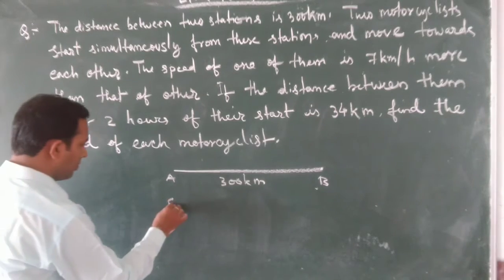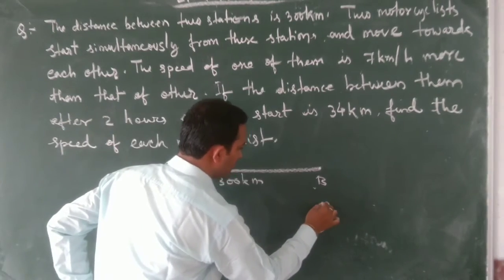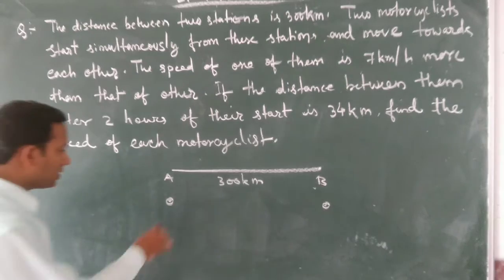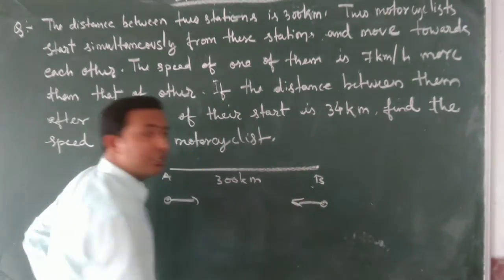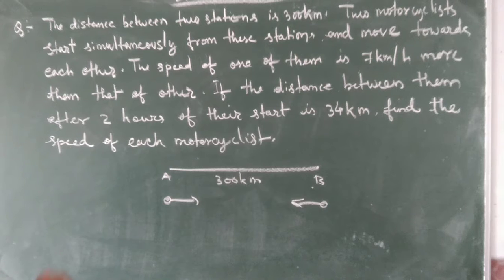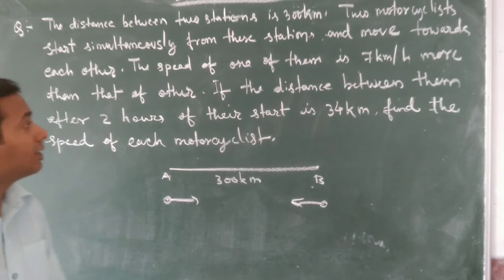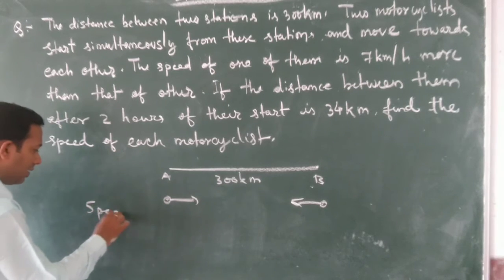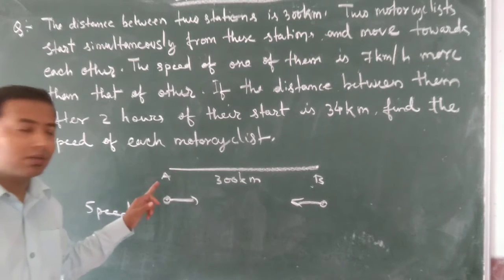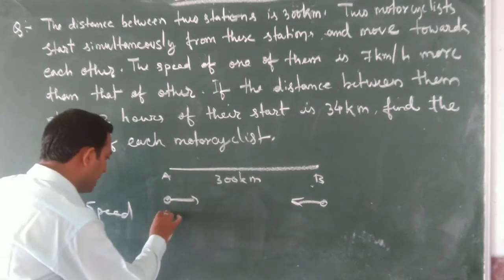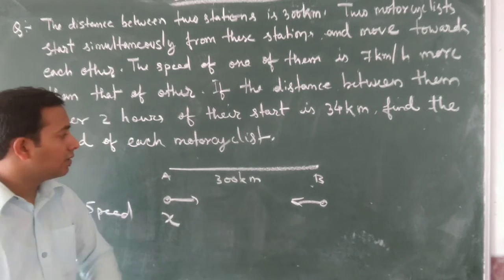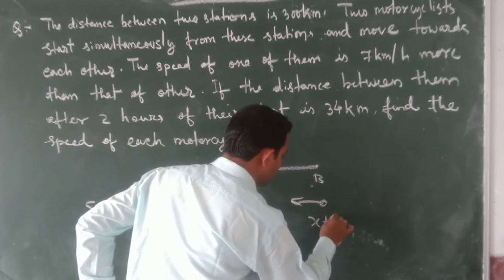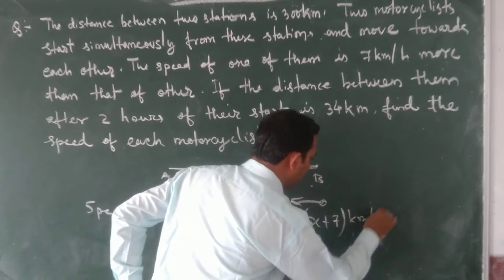Two motorcyclists start from each station and move towards each other. The speed of one is 7 kilometers more than that of the other. Let us assume the speed of the motorcyclist at place A is x, so the speed at place B will be x plus 7 kilometers per hour.